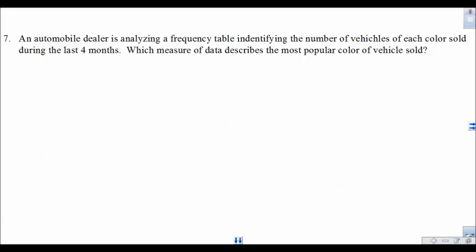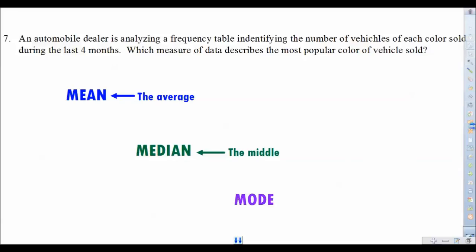Alright, now let's finish with this one here. So, number seven. Suppose an automobile dealer is analyzing a frequency table identifying the number of vehicles of each color sold during the last four months. Which measure of data describes the most popular color. The measure of data, what they're talking about is your three measures of central tendency. Those are mean, median, and mode. Let's briefly go over those definitions. Mean means the average. Median means the middle. And mode means the most. The thing that occurs the most. So, now looking at this here. Going back up to the problem. They want us to figure out what the most popular color a vehicle sold is. Hey. There it is. Mode. So, that about does it here. We've looked at the first seven questions. We'll do another video for the next seven questions here.